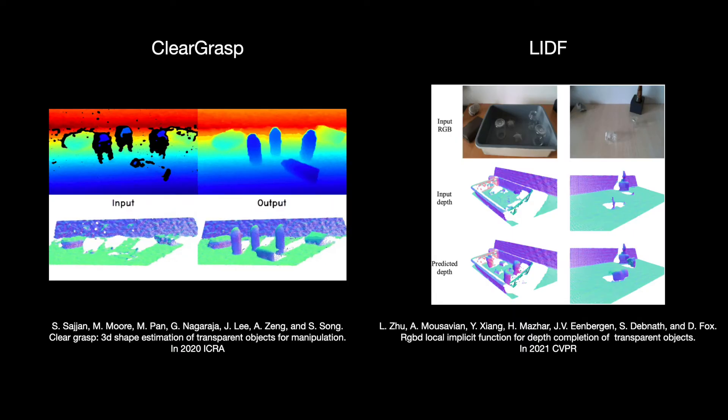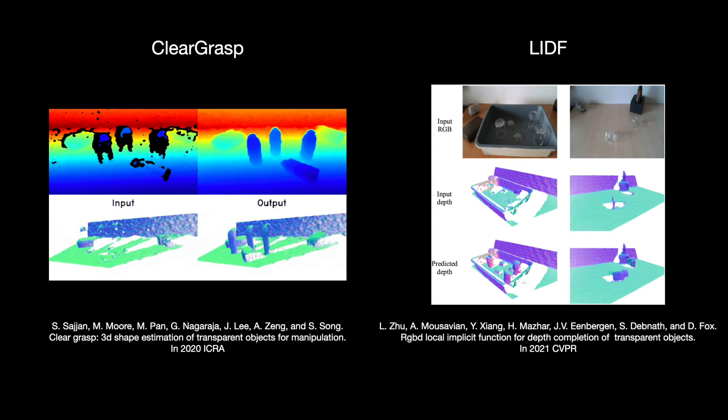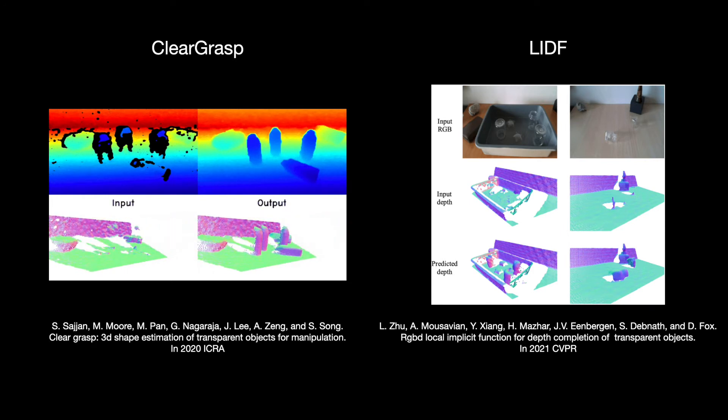Data-driven approaches have been shown to improve the quality of depth from RGB cameras. However, these methods rely on large annotated datasets that are hard to curate and do not generalize well to objects out of the training distribution.